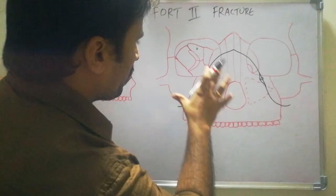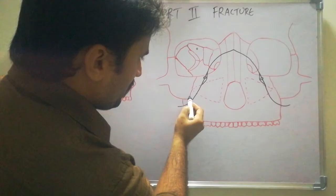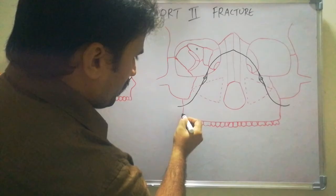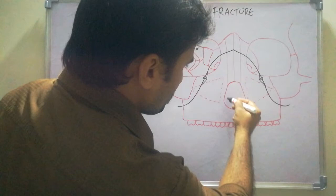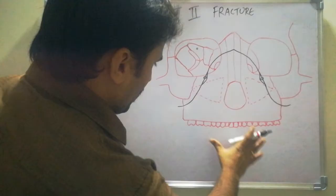This is the infraorbital foramen and this is the zygomaticomaxillary suture. This is the zygomaticomaxillary buttress. And this one is the piriform aperture — that is the external nasal opening. This is all about anatomy.